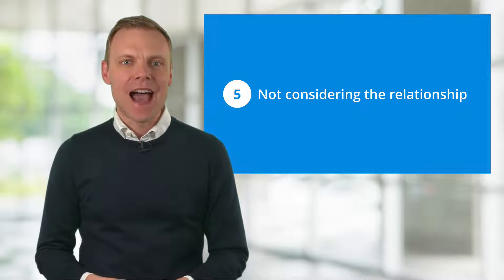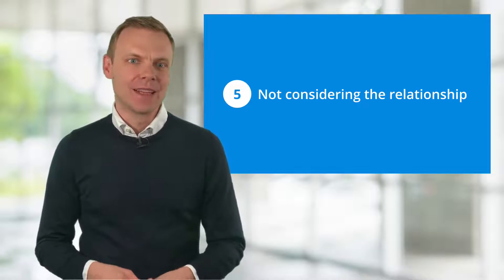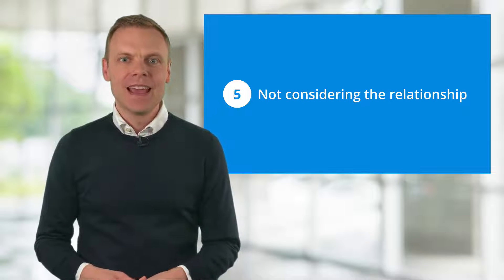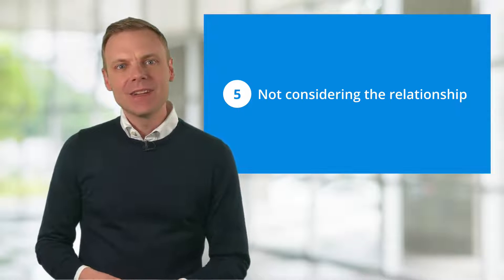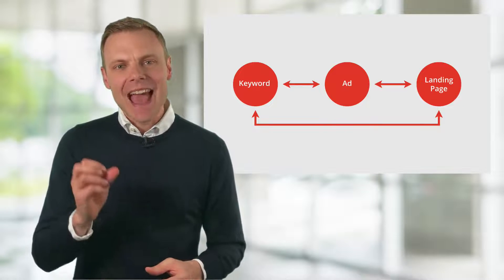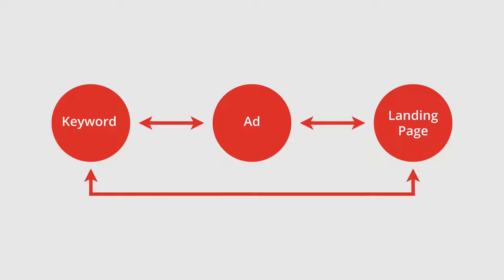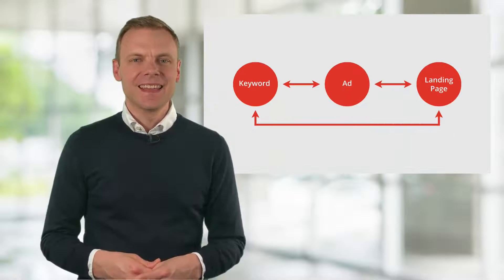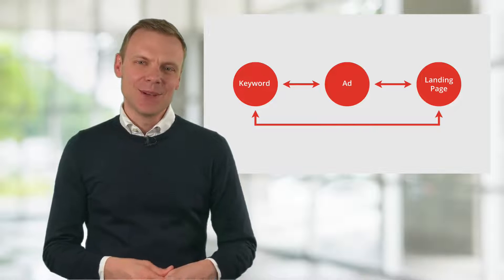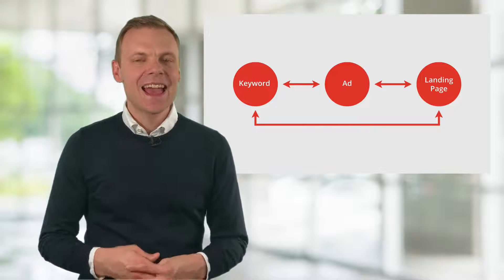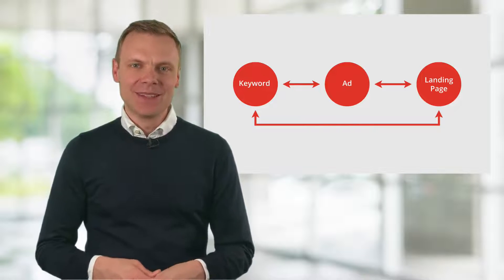Mistake number five is not considering the relationship. It's important to consider all of the elements — the keyword, the ad, and the landing page. The better the relationship between these elements, the better the performance of your campaign. It's simple, it's logical, but it's often overlooked. And not just by beginners.